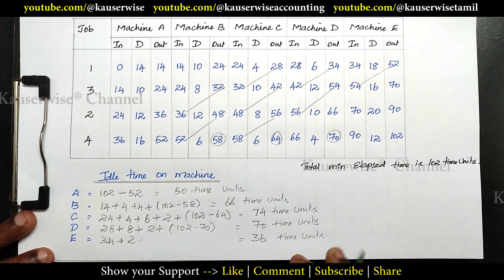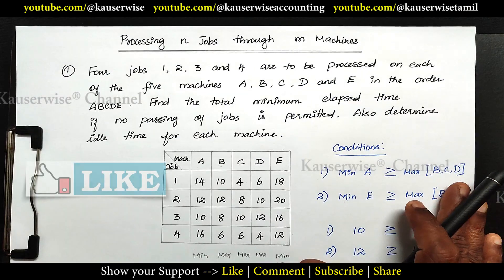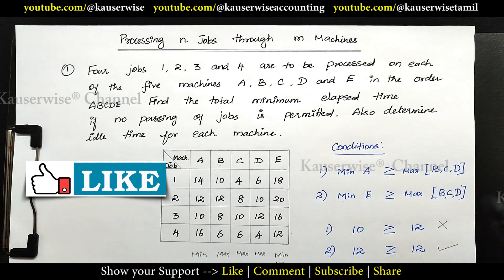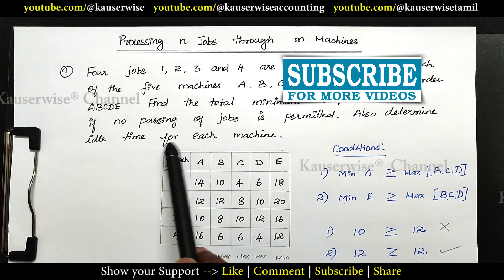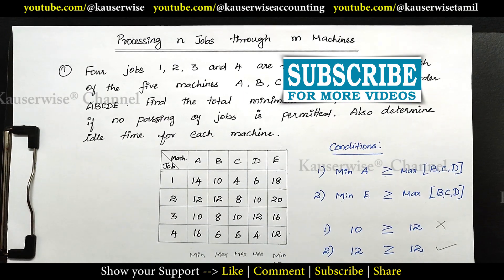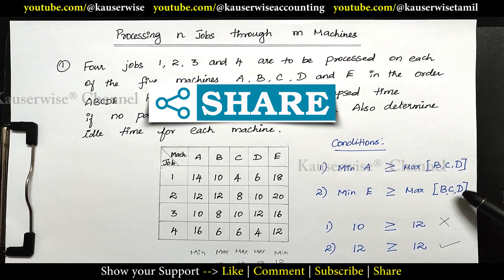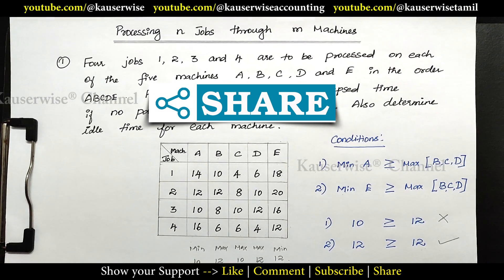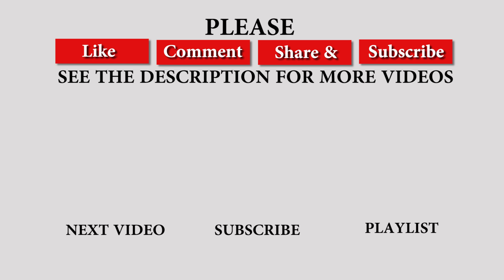So this is the way to find out the idle time on each machine individually. So far we have seen the calculation of total minimum elapsed time and idle time for each machine. In the next video, we are going to see the second case — that is, if both conditions are not satisfied, how to solve the problem. You can find the link in the description box. Hope you like this video. Please hit like, comment, subscribe and share with your friends. Thank you.